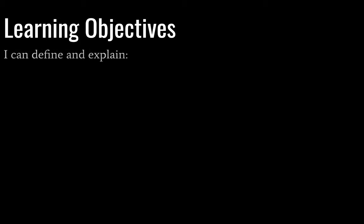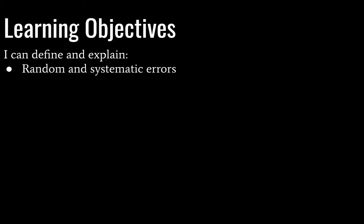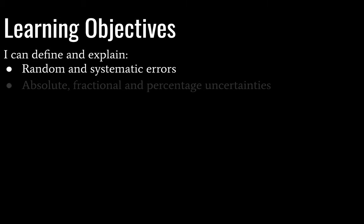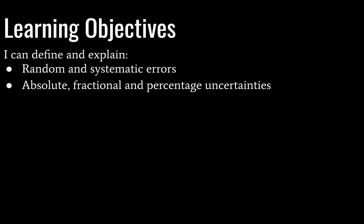Your learning objectives here. By the end of this lesson, you will be able to define and explain random and systematic errors, absolute fractional and percentage uncertainties, and error bars.